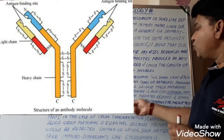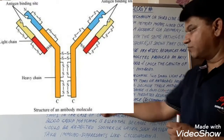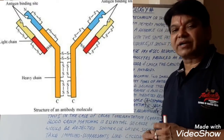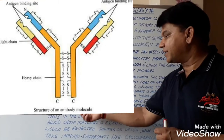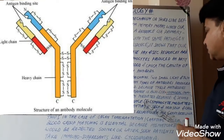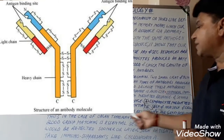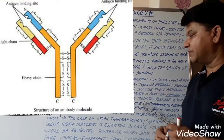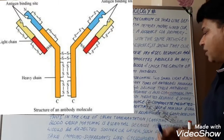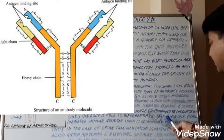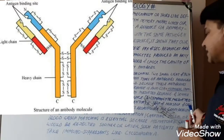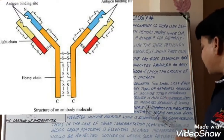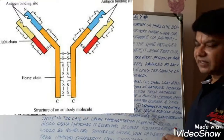CMI stands for cell mediated immune response — this is an important term. CMI is mediated by T lymphocytes. The body is able to differentiate between self and non-self. Cell mediated immune response is responsible for graft rejection.